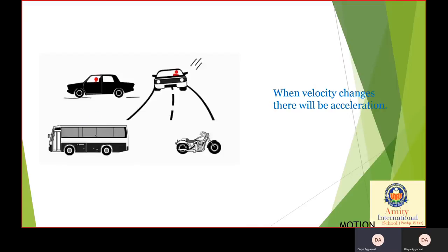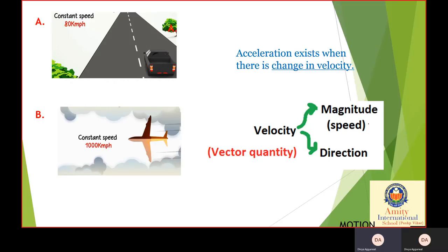So, what is acceleration? Acceleration is the change in velocity. When you sit in any of these vehicles, there is acceleration. Velocity has two components: speed and direction. If there is a change in speed or a change in direction, then we say that the body is accelerating.